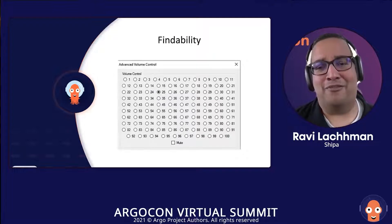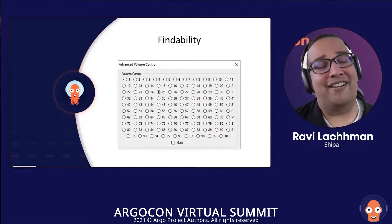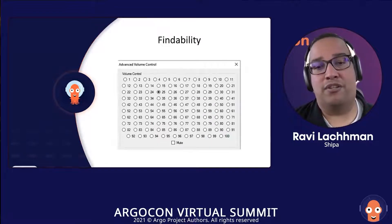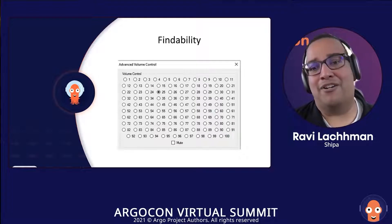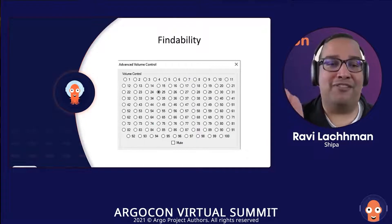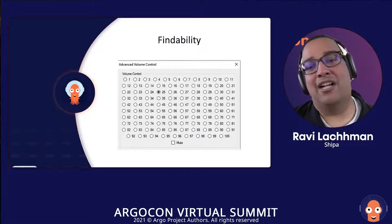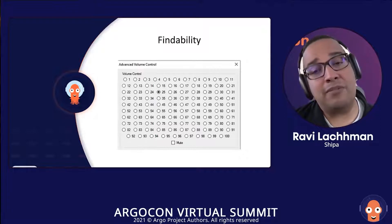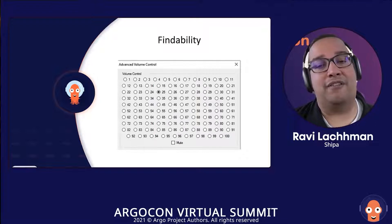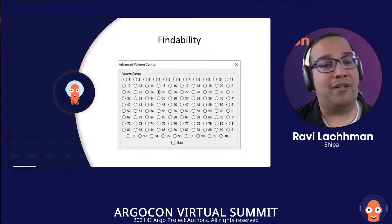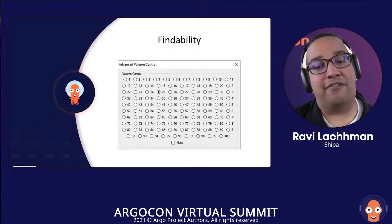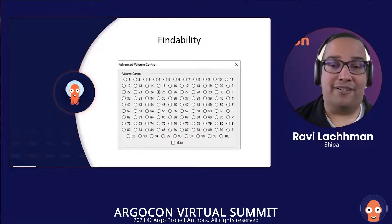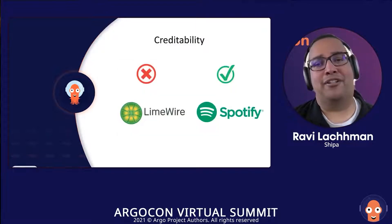Findability — can someone find the functionality they're looking for? Findability can be in the product itself, in documentation, or through something called a natural affordance. For example, you push a flat panel, you pull a door handle — those types of UX experiences. Making sure that a first-time or even an experienced user has the ability to find the functionality they need, or to expose and integrate particular functionality they need. There are lots of layers there.